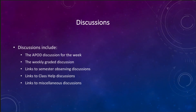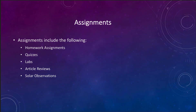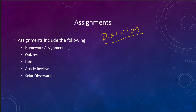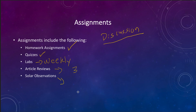In addition to discussions, there are assignments. The assignments include all graded assignments for the week except for the discussion, which you access through the discussion link. You will not see all of these each week, but they include homework assignments about every other week, quizzes about every other week, labs which will be weekly, article reviews — three of those during the semester — and solar observations. There is a solar observation project due at the end of the semester, but three times during the semester I will ask you to turn in the solar observations you've obtained so far.